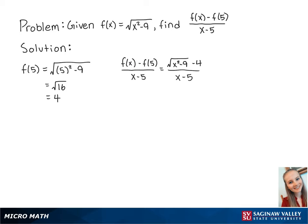We can also rewrite this by multiplying by the conjugate. If we do this, we get x squared minus 9 minus 16 over x minus 5 times the square root of x squared minus 9 plus 4.